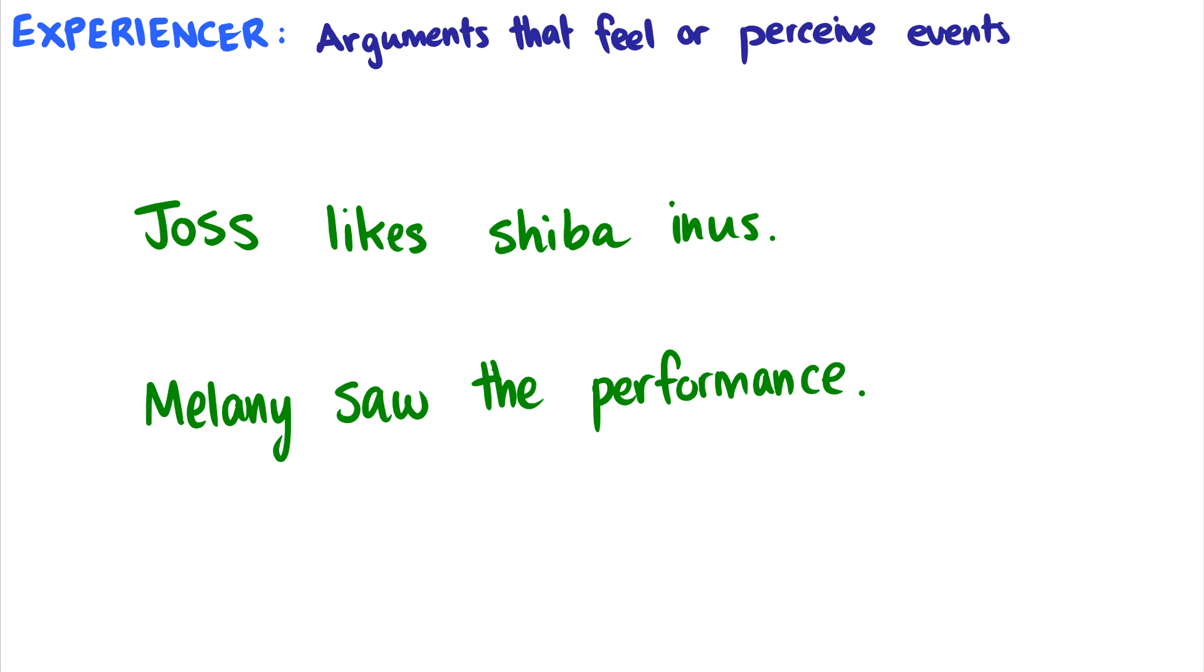The second important theta role is the experiencer, and these are arguments that feel or perceive events. This is a little bit different than an agent, but they're very easily confused with agents. So Joss likes Shiba Inus. In this sentence, likes is a verb that takes an experiencer as a subject, and I just write that with exp.